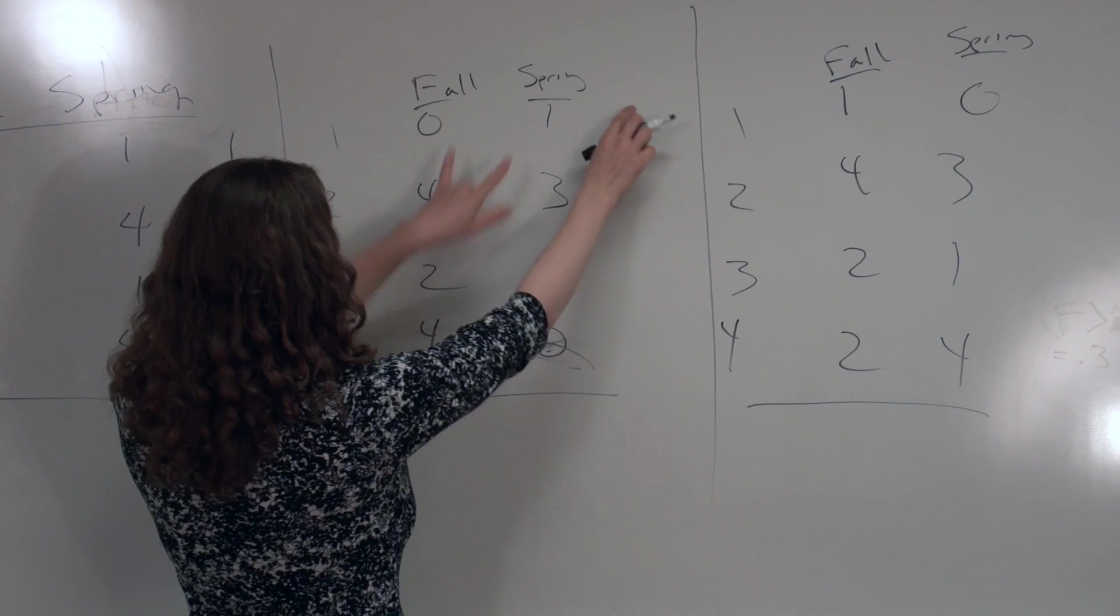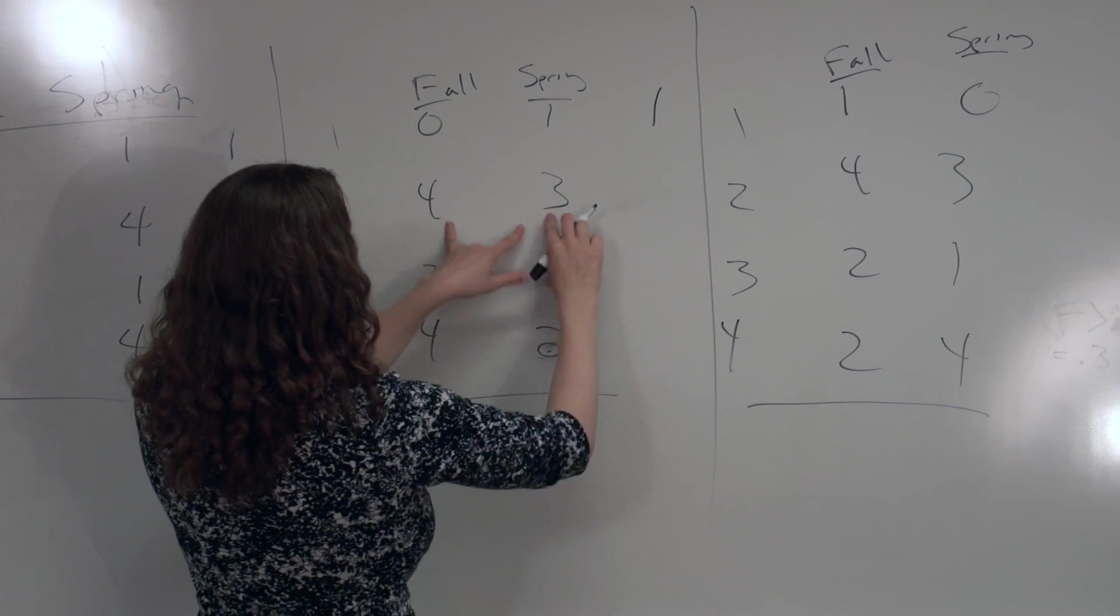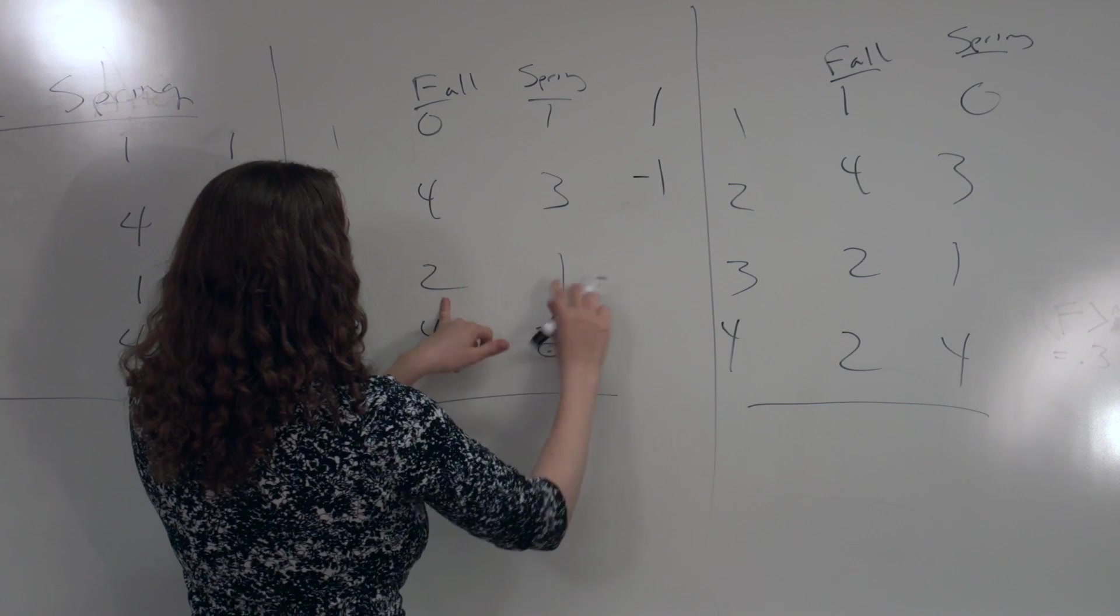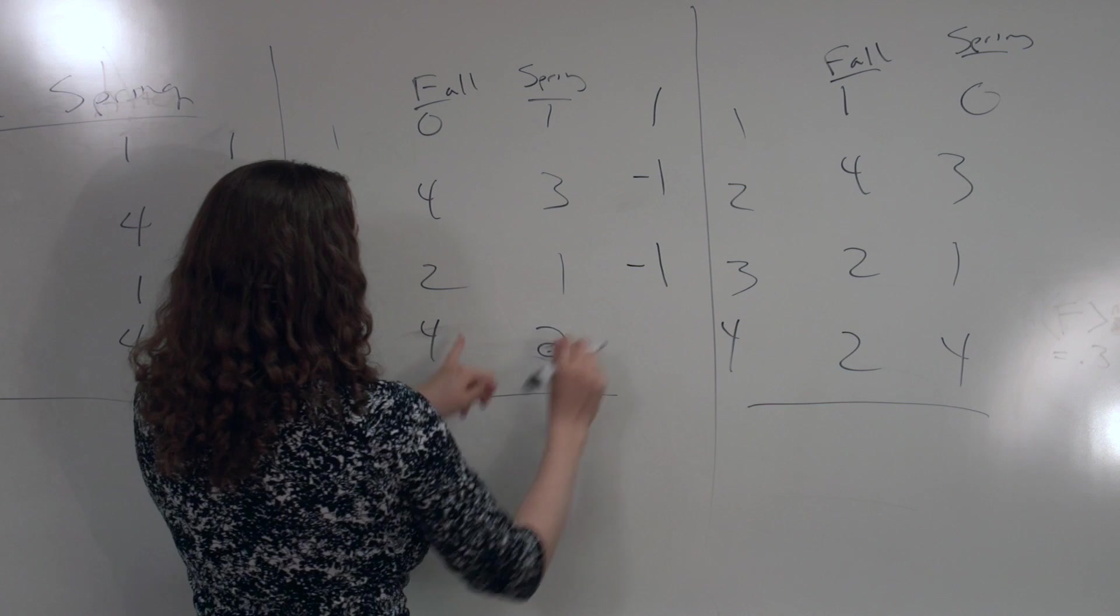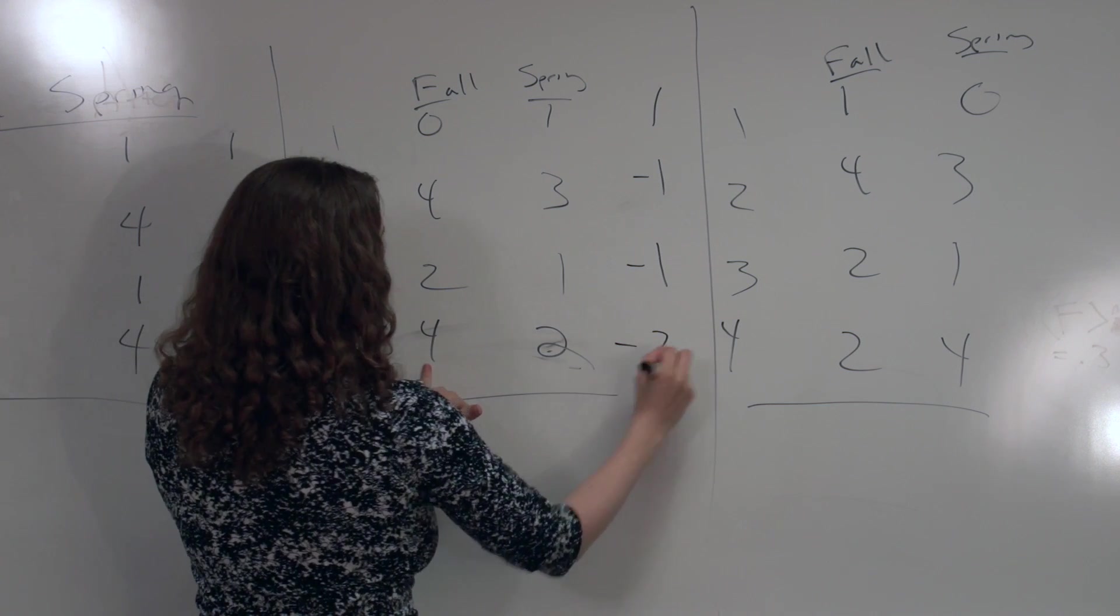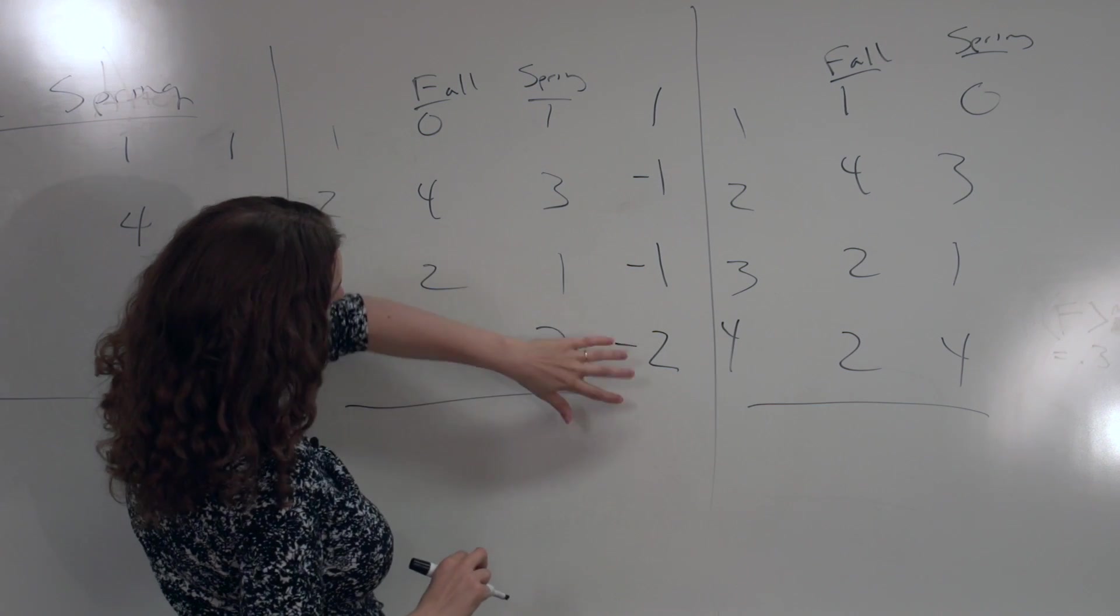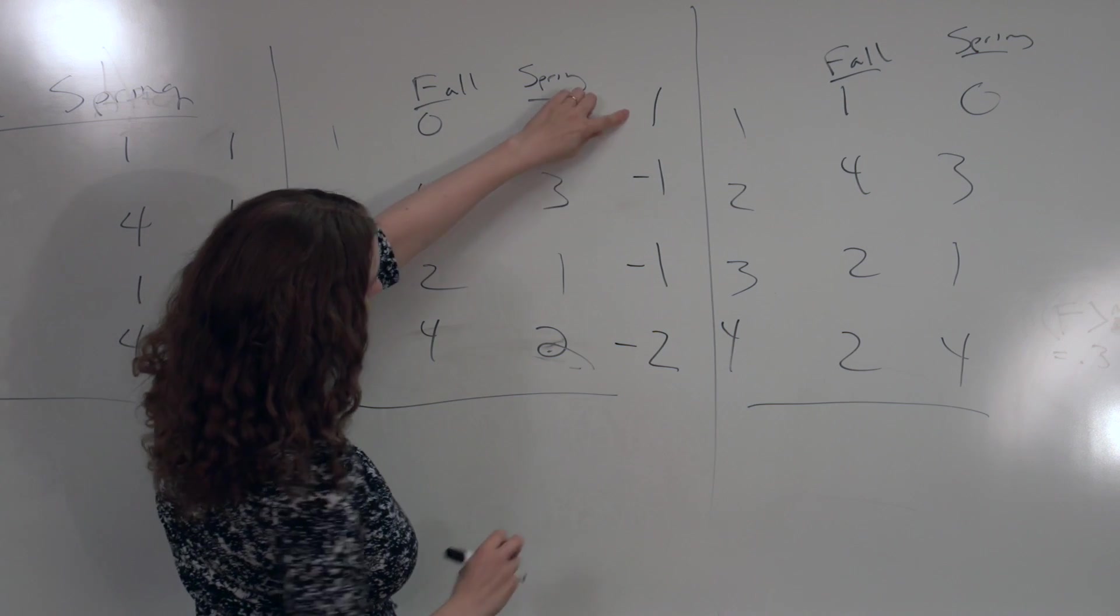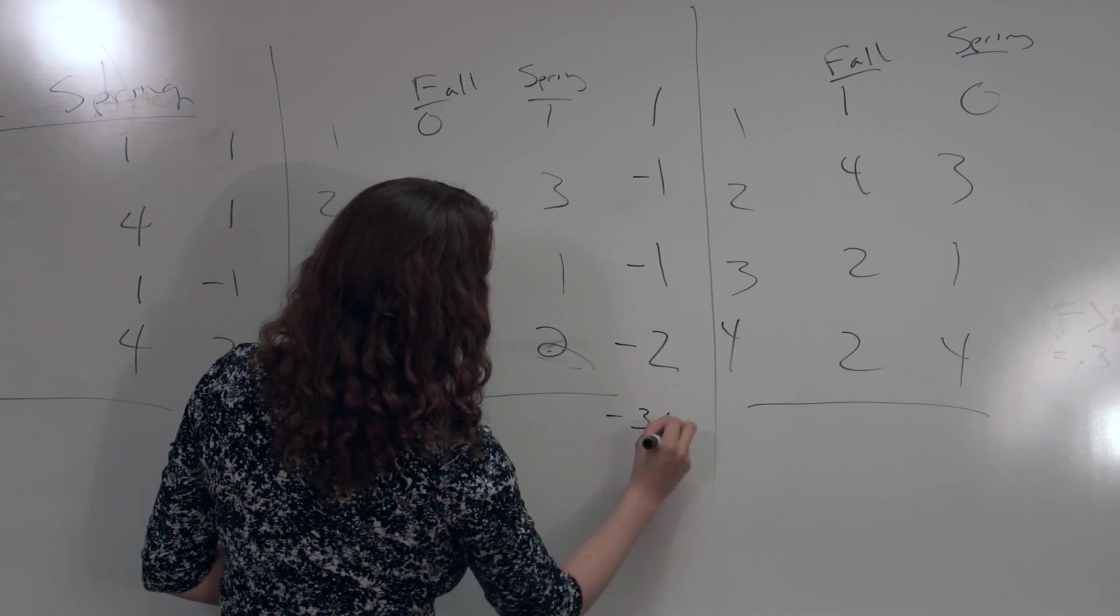And I want to take the average of these numbers. So I've got 1 plus 1 is 2, minus 1 is 1, plus 2 is 3, so I've got 3 fourths as my average. What if I took a difference here? I've got 1 minus 0 is 1, 3 minus 4 is negative 1, 1 minus 2 is negative 1, 2 minus 4 is negative 2. And if I sum these up, I've got a total of negative 3 divided by 4.